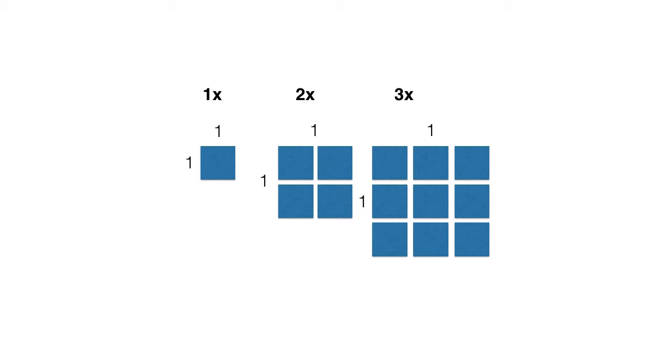...apps already used the point system to position elements. So Apple, not wanting to break any existing apps, continued using the point system. In 2x, basically one point is equal to 2 by 2 pixels.